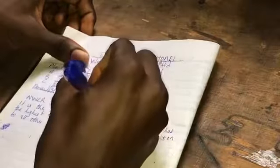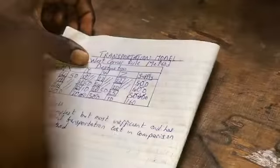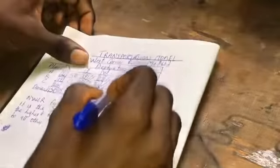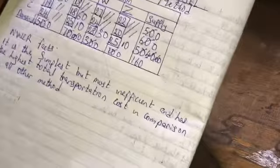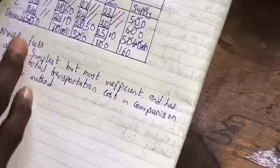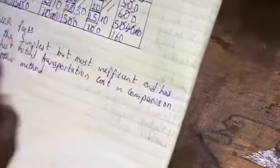The next step is to allocate the remaining 10 to the remaining cell which is 10 also. Note that this is a balanced transportation model. We will be talking more about the unbalanced cells in the next class.